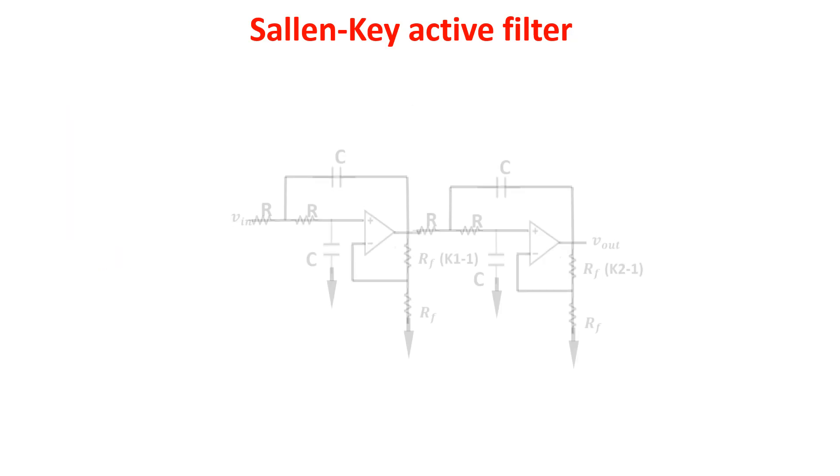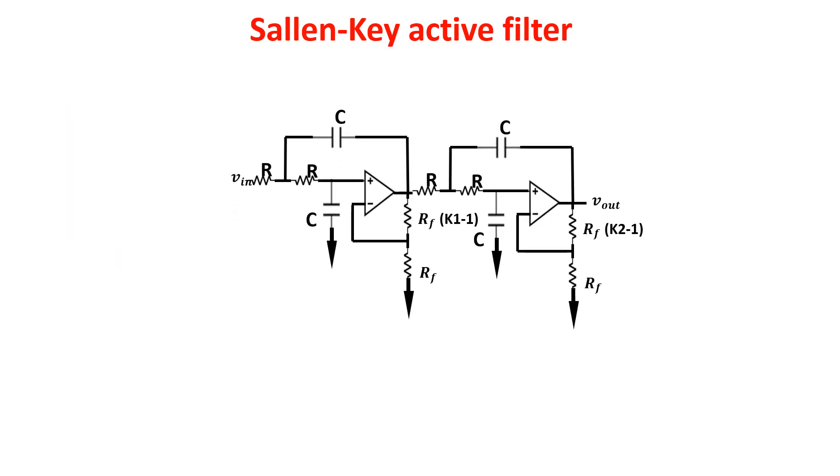Of course you can cascade two Sallen-Key filters to have a fourth order filter and you have to choose the proper value of the gain for the first and second stage to have a Butterworth response.